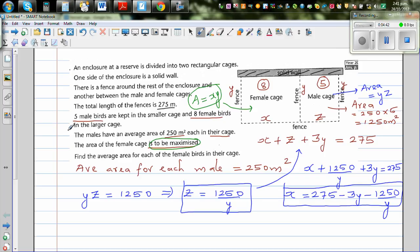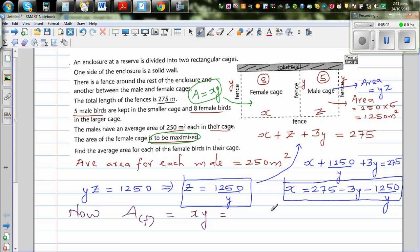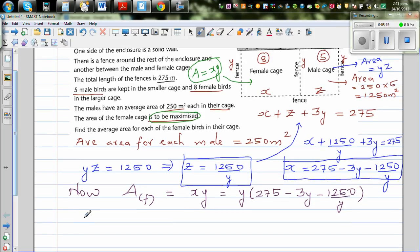Let's make X the subject. If you make X the subject, X is equal to 275 minus 3Y minus 1250 over Y. So I have written X and Z in terms of Y. What can we do now? Let's go back to maximizing A.